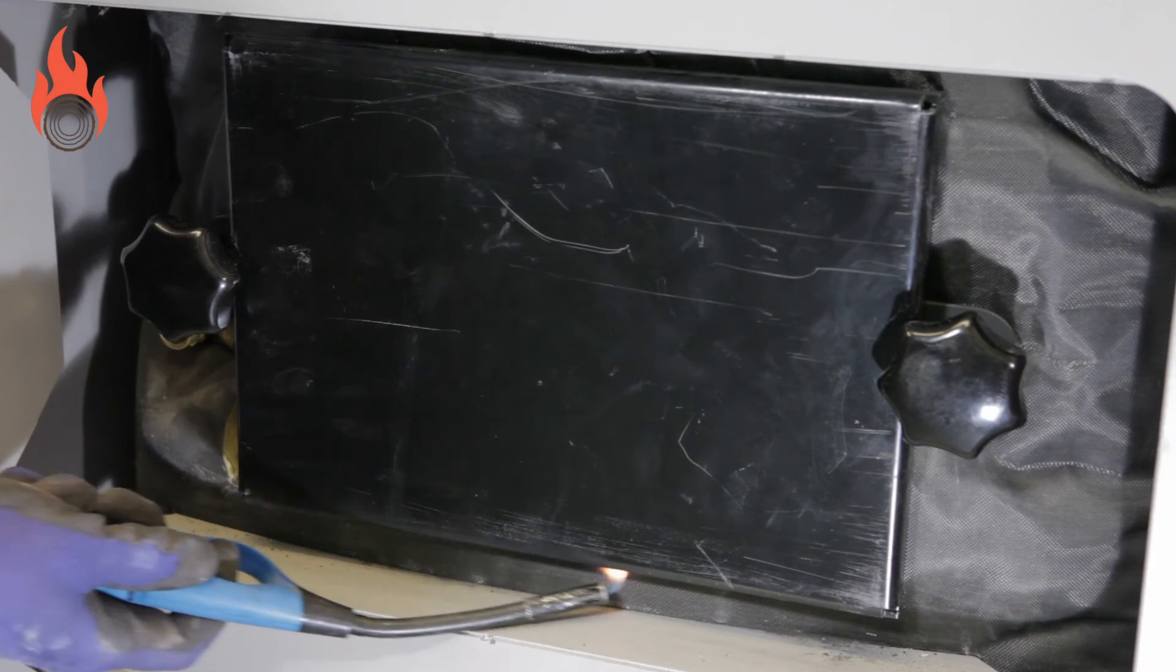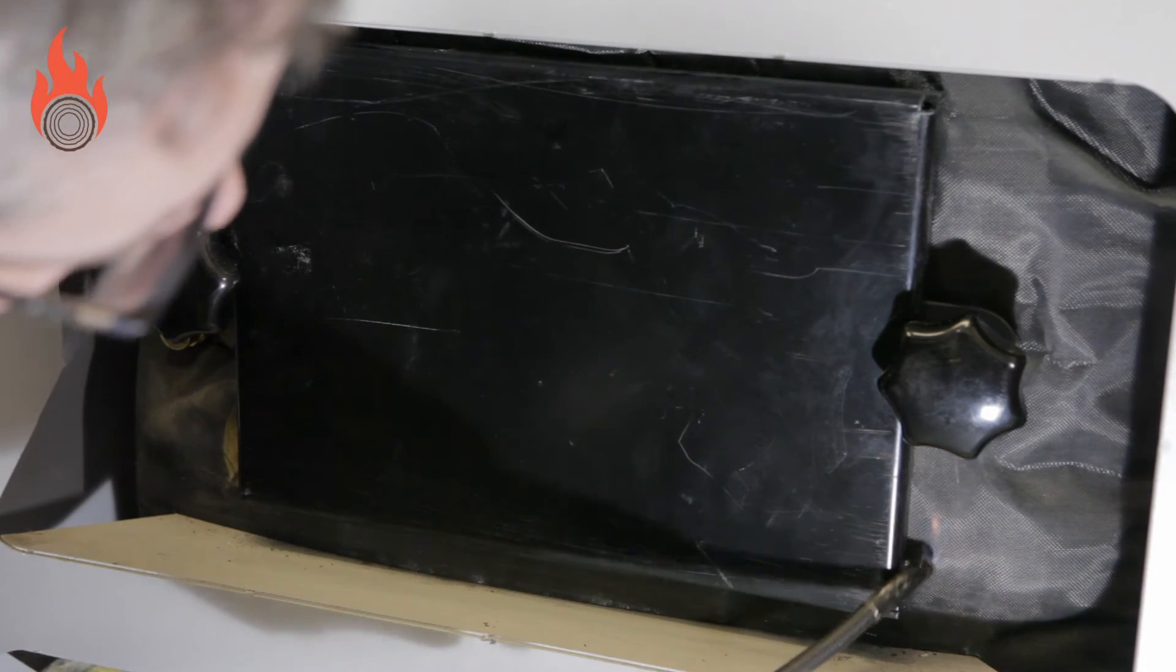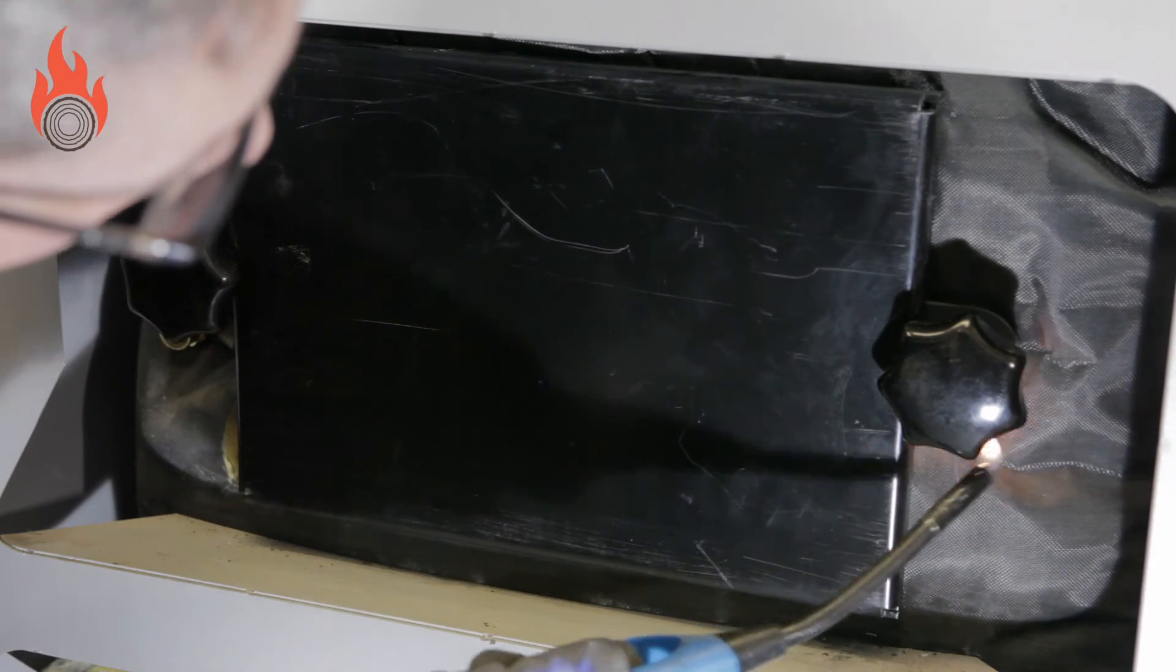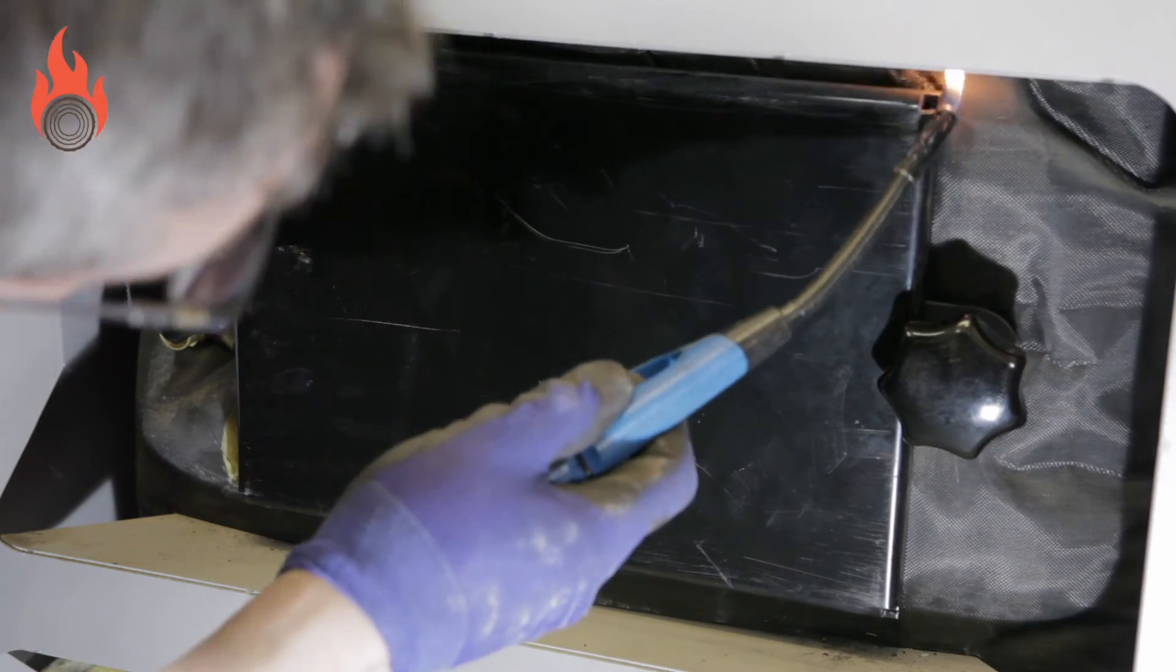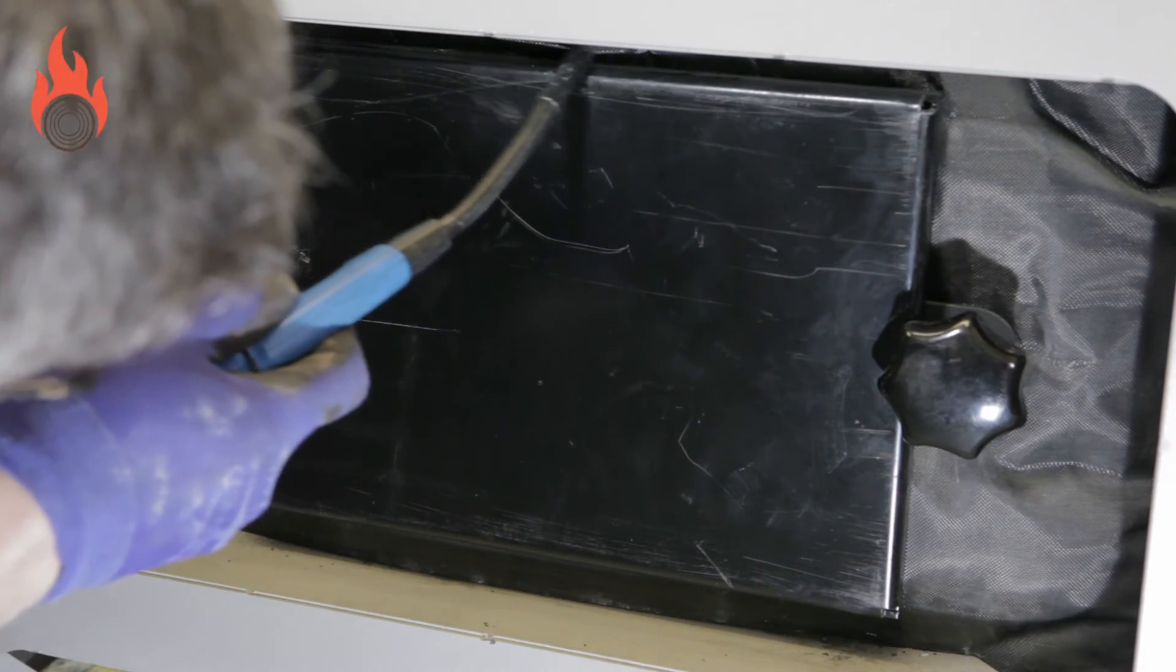If you then hold a lighter all around the door, you will see if the flame is being pulled towards the door or if the flame is stable. If the flame is being sucked towards the door, then the door seal will need to be replaced.